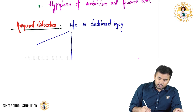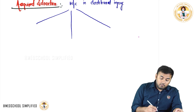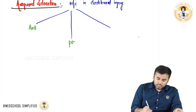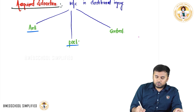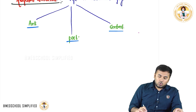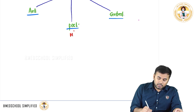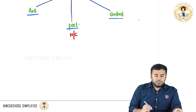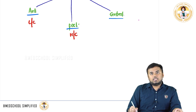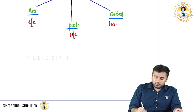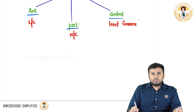There are three types of acquired dislocation: anterior dislocation of the hip, posterior dislocation of the hip, and central dislocation. Out of all three, posterior dislocation is the most common. Anterior dislocation is less common, and central dislocation is the least common.